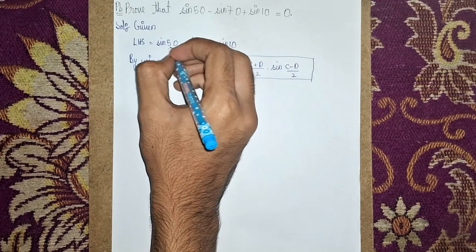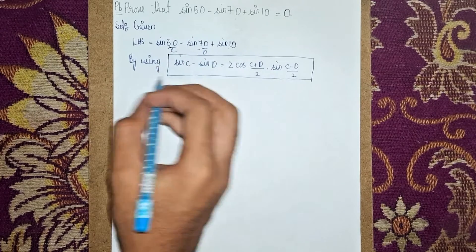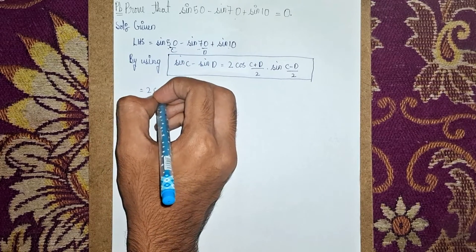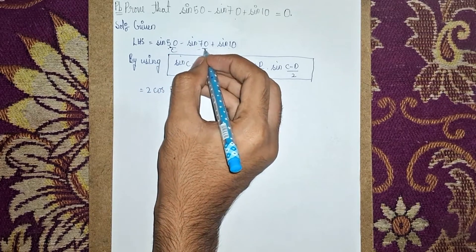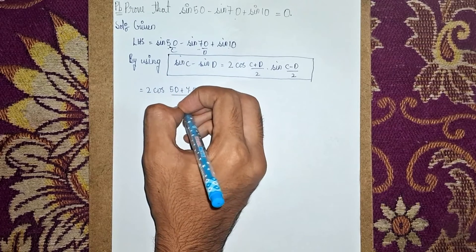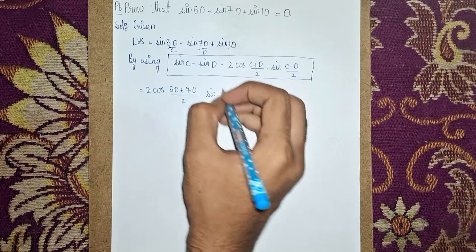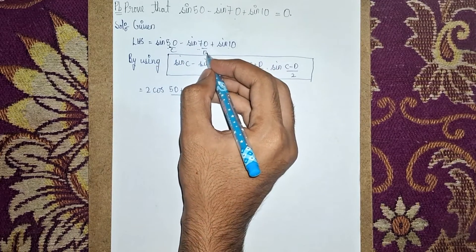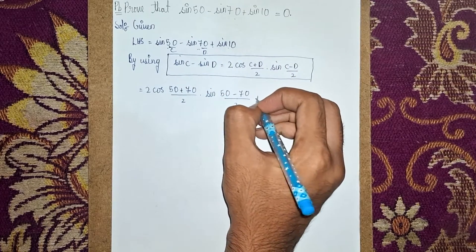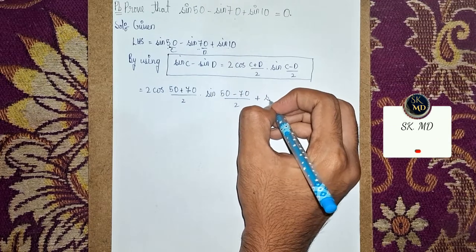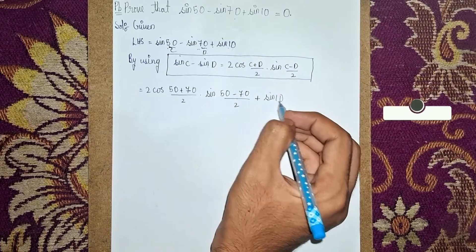Here C is 50 and D is 70. Substituting, this becomes: 2 cos((50 plus 70) over 2) times sin((50 minus 70) over 2), plus sin 10.